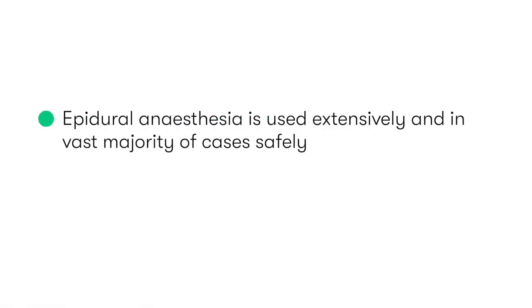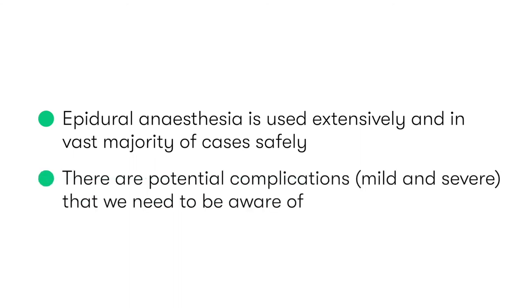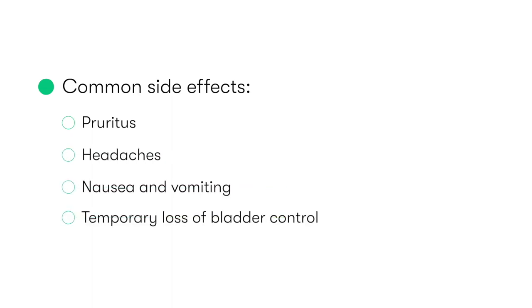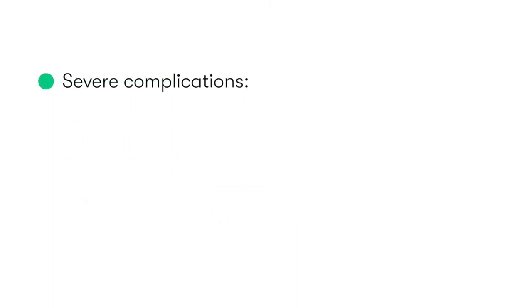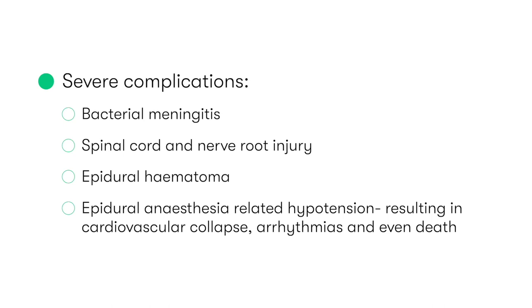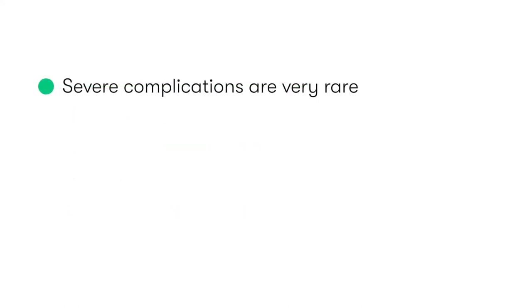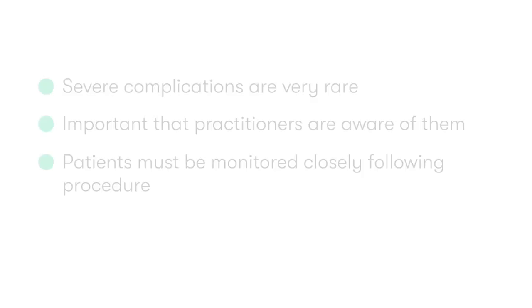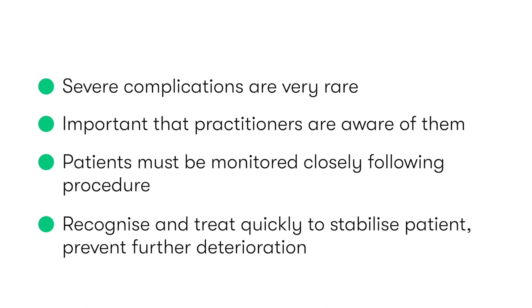Whilst epidural anesthesia is used extensively and in the vast majority of cases safely, there are potential complications — mild and severe — that we need to be aware of. These range from relatively common side effects such as pruritus, headaches, nausea and vomiting, and temporary loss of bladder control, to more alarming and thankfully more rare complications such as bacterial meningitis, spinal cord and nerve root injuries, epidural hematomas, and significant epidural anesthesia-related hypotension resulting in cardiovascular collapse, arrhythmias, and even death. Whilst these severe complications are very rare, it's important that practitioners monitor the patient closely following the procedure and act quickly and efficiently to remedy them, stabilize the patient, and prevent any further deterioration.